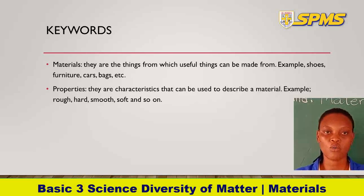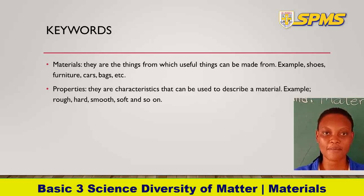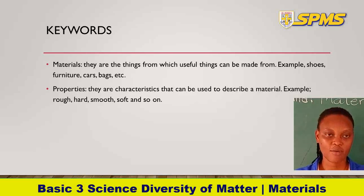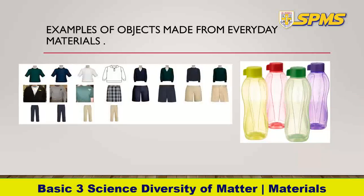So when something is smooth, it will help us describe the type of material that we have. On our screens we can see different types of objects. So these are examples of objects made from everyday materials.